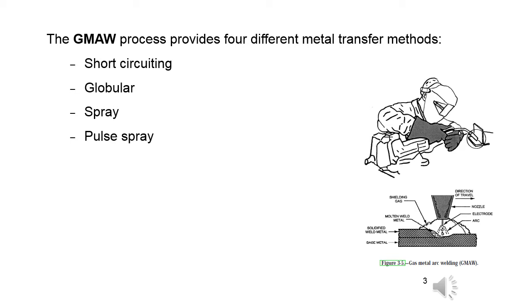Short-circuiting transfer characteristics: at low current and voltage, short-circuit transfer occurs. The weld is a shallow penetrating weld with low heat input. Using GMAW in this mode allows welding in all positions since the weld puddle is so small. In comparison to the other three modes of transfer, this method is the slowest — low productivity. Used primarily for sheet metal applications, this mode produces large amounts of spatter if welding variables are not optimized. This mode is also known as short-circuit or dip transfer.